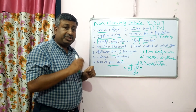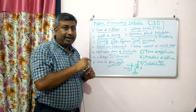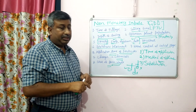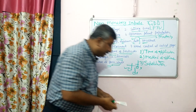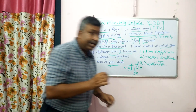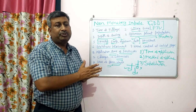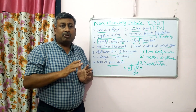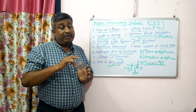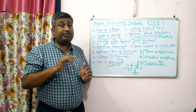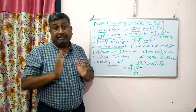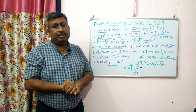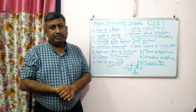So these are the important non-monetary inputs which do not involve extra cost but change the practice — time of application, method of application, and substitution — and we can get higher yield without any extra cost. Such inputs are called non-monetary inputs because when their time of application, method of application, or substitution is changed, they cause an increase in yield without involving extra cost. These are the important non-monetary inputs in crop production. Thank you very much.